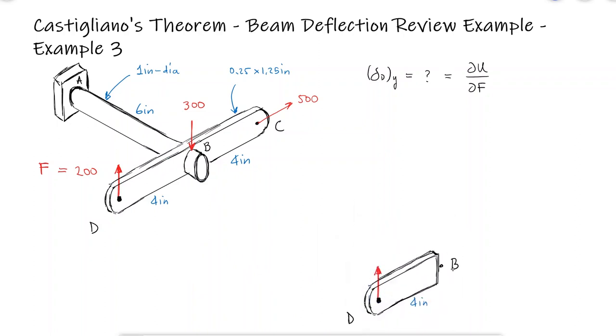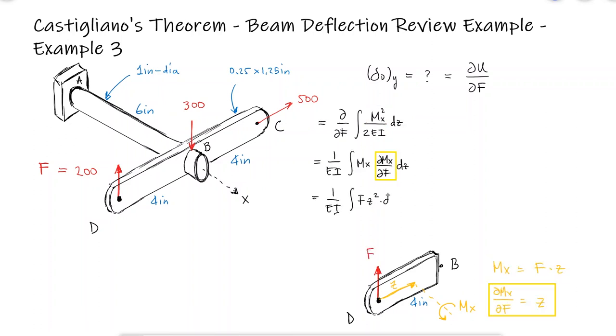...we see that the internal strain energy of member DB is that due to bending, caused by the moment about the x-axis. The moment would be equal to F times Z and the partial with respect to F, only Z.